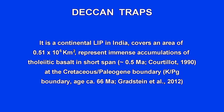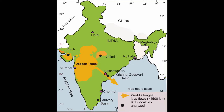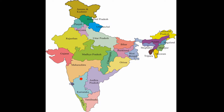When we define Deccan volcanism in a nutshell, it is a continental large igneous province. There are large igneous provinces in oceans also, but our talk is confined to continental ones, focused mainly on Deccan volcanism. They cover an area of 0.51 × 10⁶ km². You can imagine how extensive this volcanism is — it covers many provinces in the country like Maharashtra, Goa, Karnataka, Madhya Pradesh, Rajasthan, part of Uttar Pradesh, and part of Andhra Pradesh.